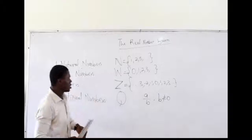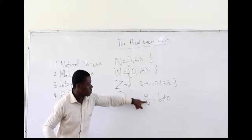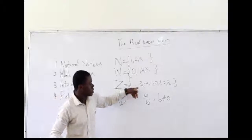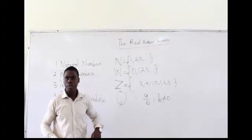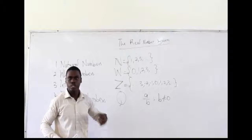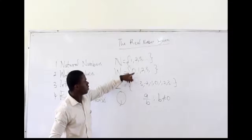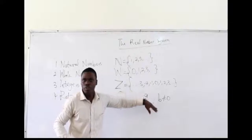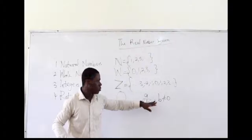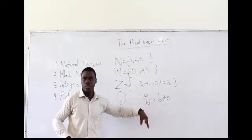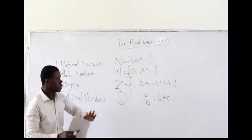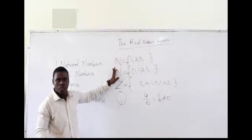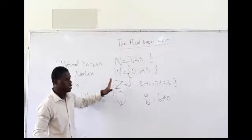Since A and B can be integers, those sets are brought into the arena of rational numbers. Similarly, natural numbers and whole numbers can be looked at as rational numbers. So rational numbers can be considered as a collection of natural numbers, whole numbers, and integers.